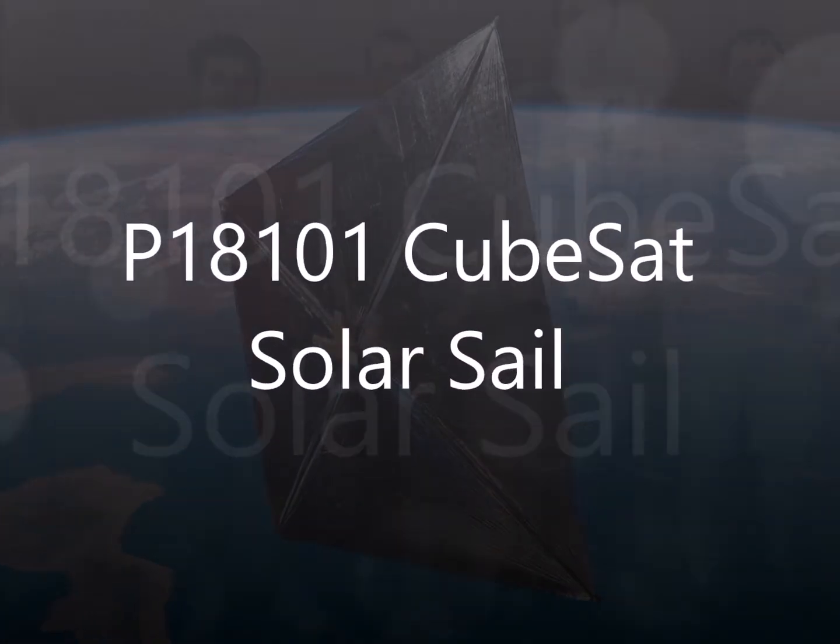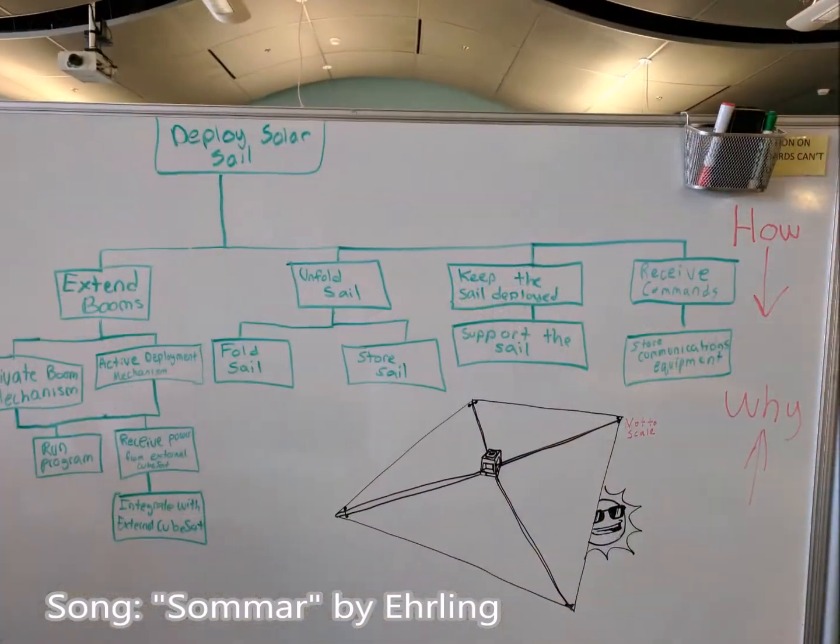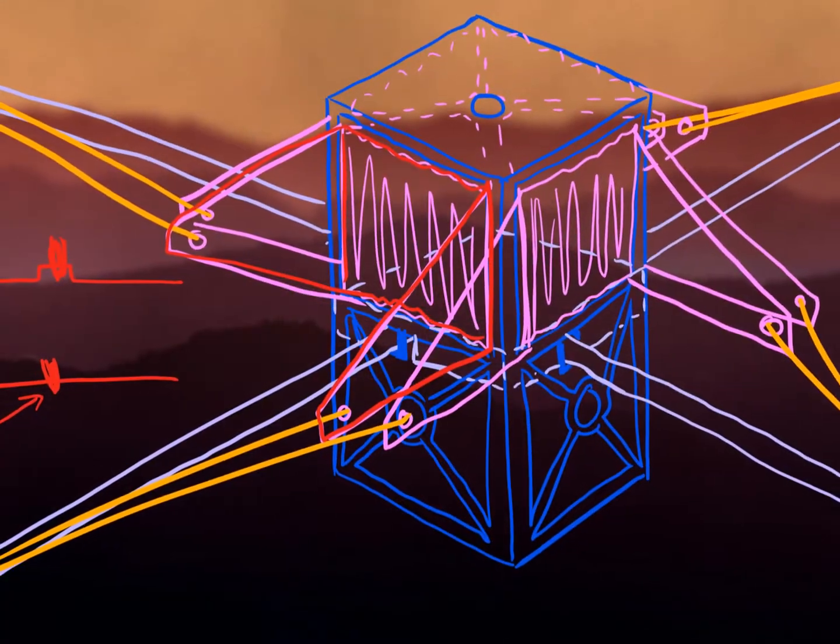About a year ago, a team of four mechanical engineers proposed an ambitious project partnering with RIT Space Exploration to design a mechanism for deploying a solar sail from a CubeSat.